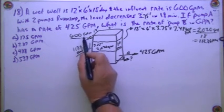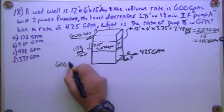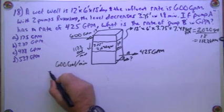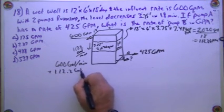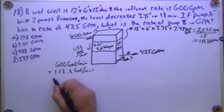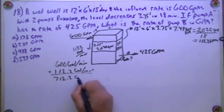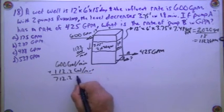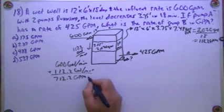112.2, so the total pumping rate is going to be 600 gallons per minute plus 112.2 gallons per minute, going to be 712.2 GPM. So that's total pumping.